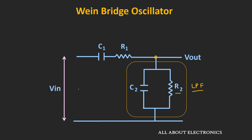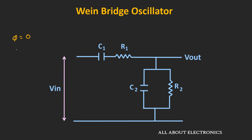So this RC network does not allow low frequencies as well as high frequencies. But at one particular frequency, the output of the circuit will be maximum, and that frequency is known as the resonant frequency. In this way, this RC feedback network will act as a notch filter. Looking at the response, only at one particular resonant frequency will the output be maximum; at all other frequencies the output will be minimum. At this resonant frequency, the phase shift of the circuit will be equal to zero, and the ratio of output by input will be equal to 1/3.